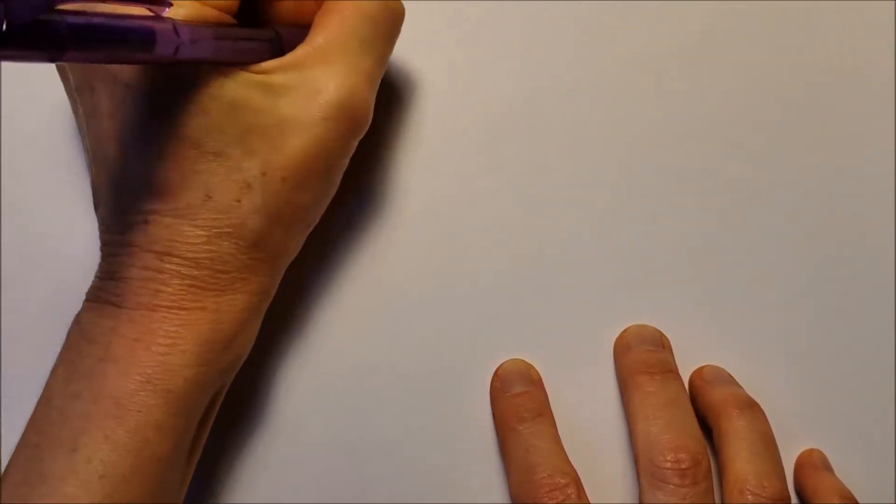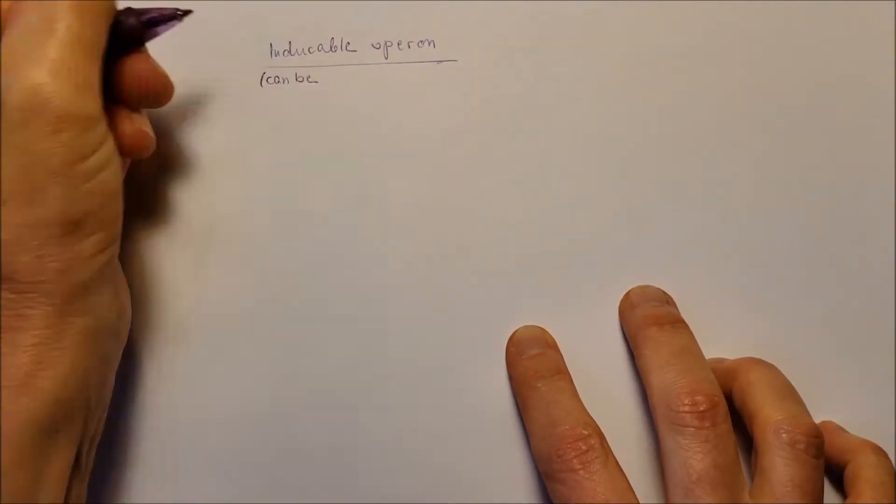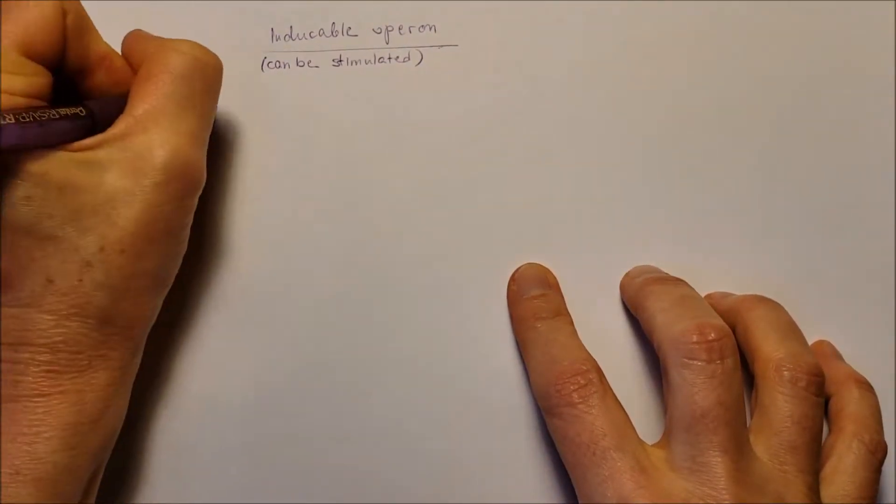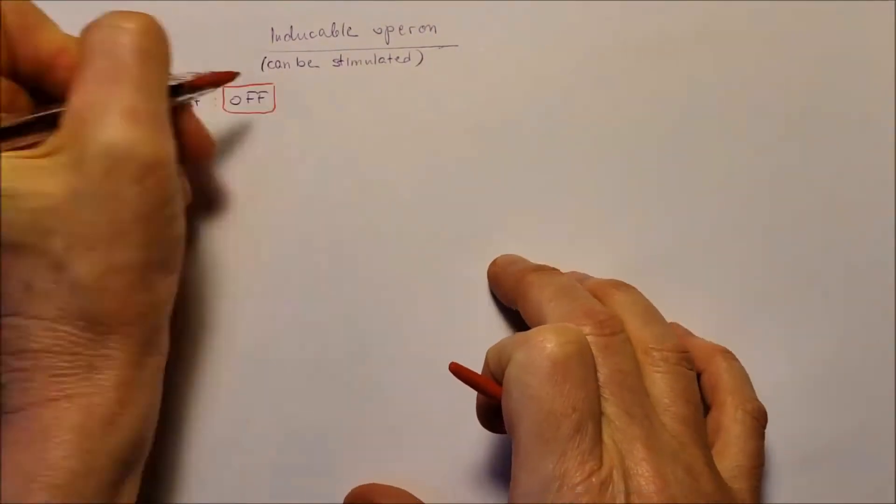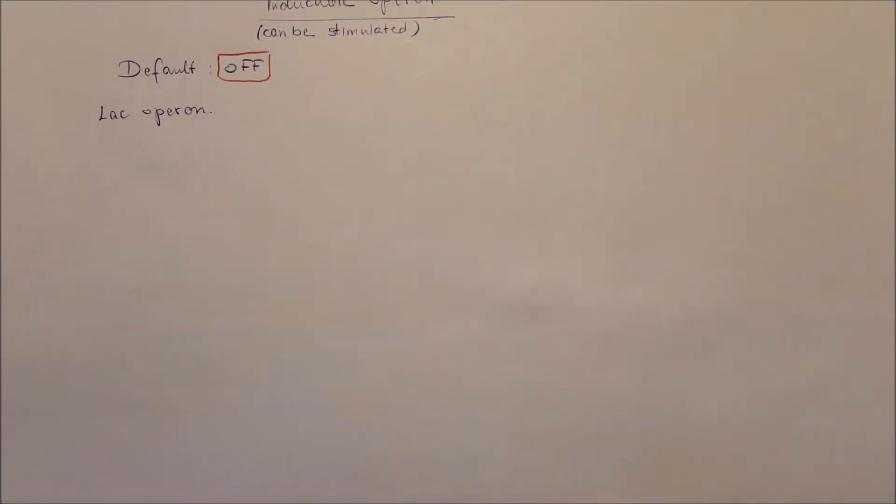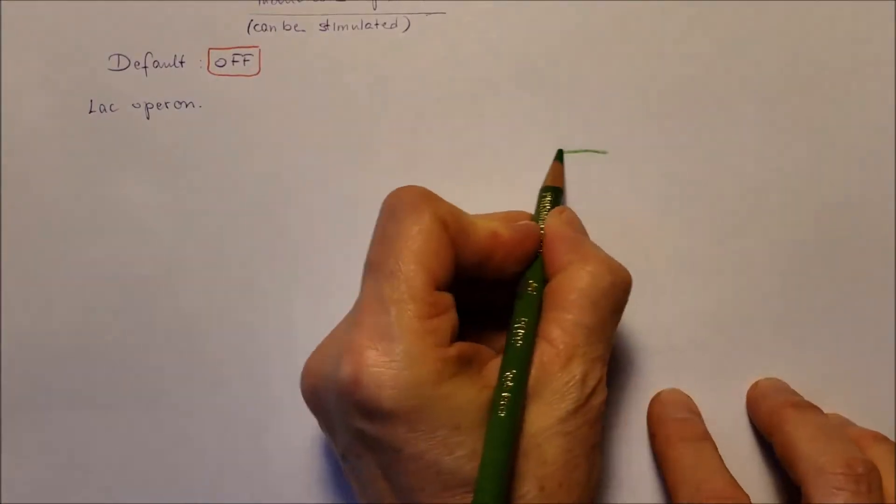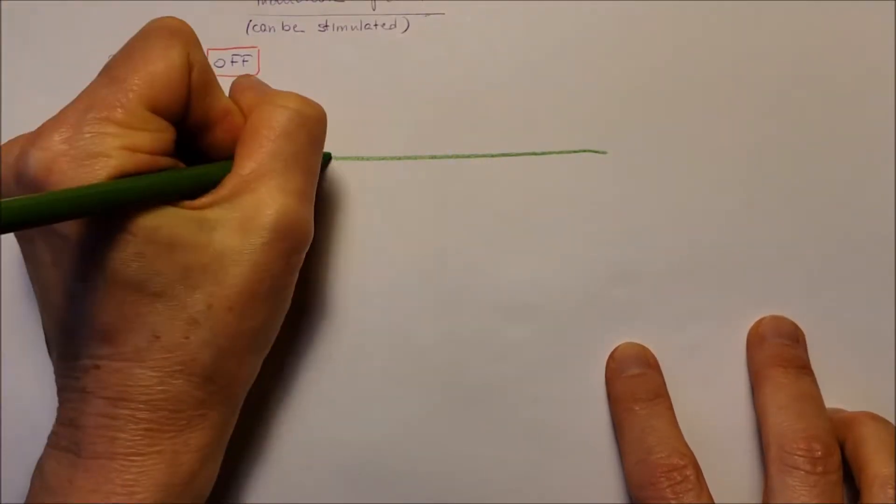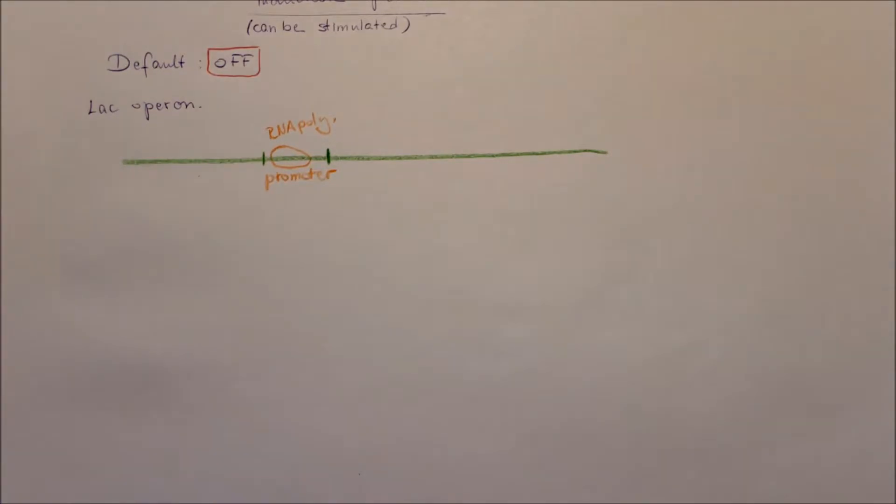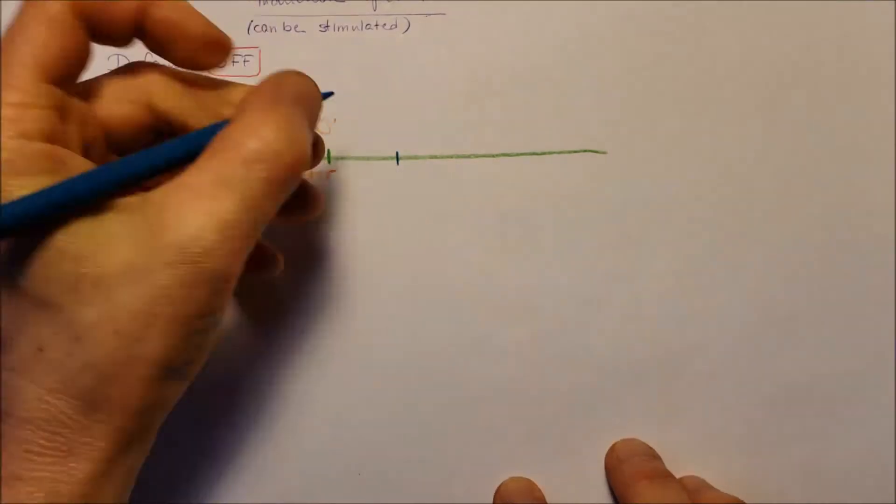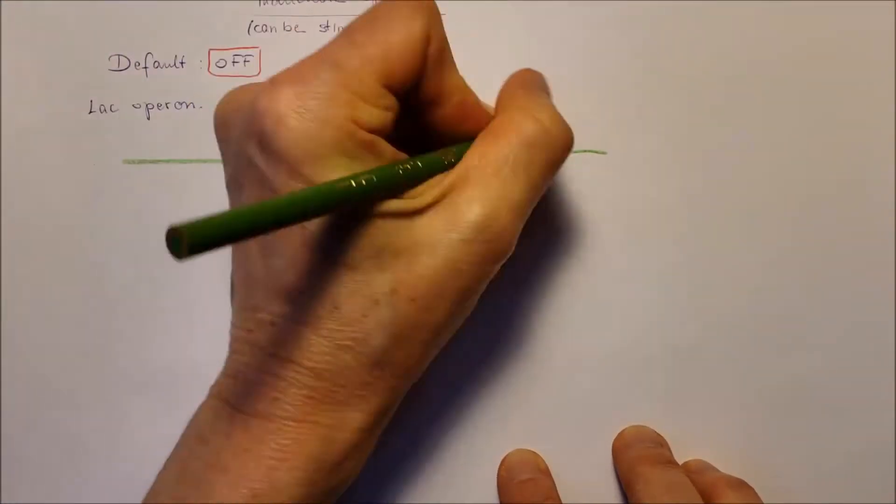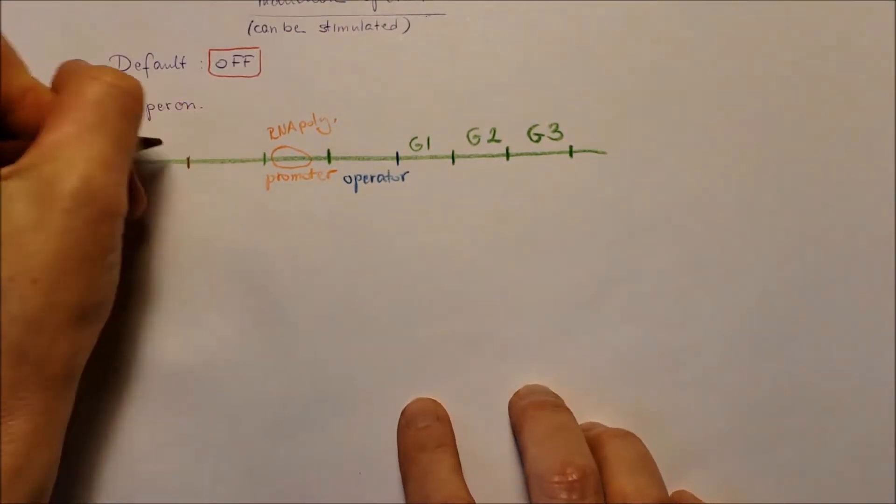Now, that was the repressible operon. Let's focus on the inducible operon that can be stimulated. At this point, the default of the operon is off. The example for that is the lac operon that produces an enzyme that will break down the lactose that is in the surroundings, and the lactose breaks down to glucose and galactose, and the bacteria can use the glucose for energy source. It also has a promoter section where the RNA polymerase binds, also contains an operator section, and a couple of gene segments, a group of genes.